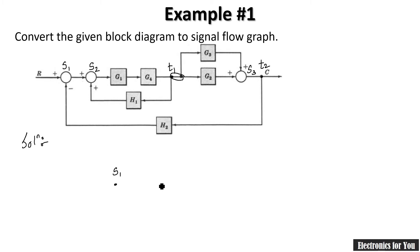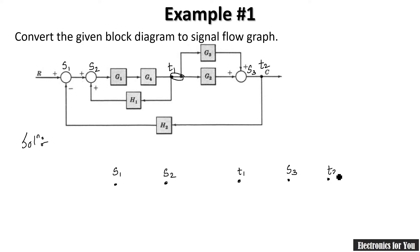Now let me indicate all these nodes. This is S1, this is S2, then T1, then S3, and T2. The output node is indicated with gain equal to one, and the input R is also indicated with gain equal to one.